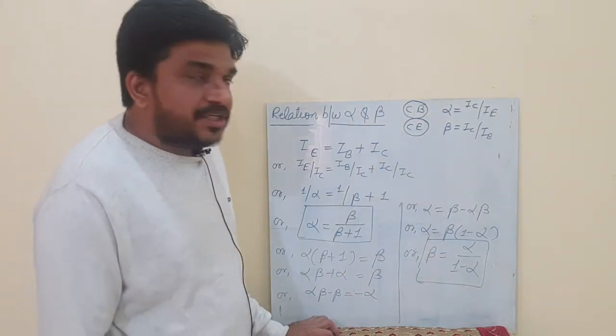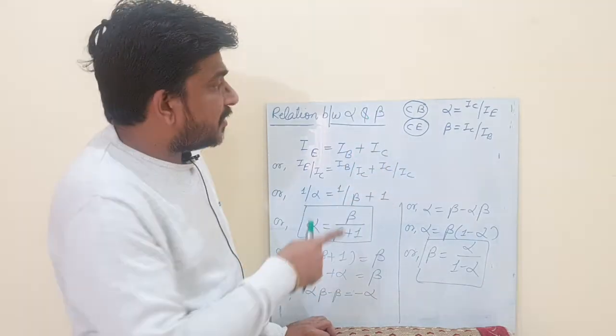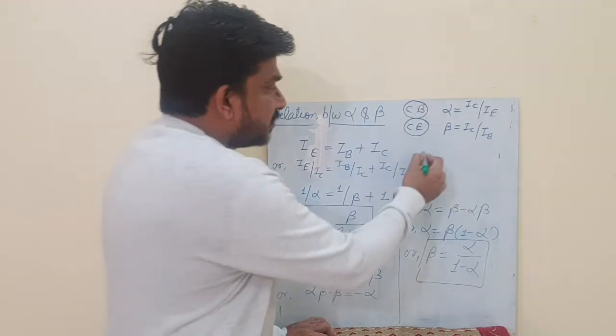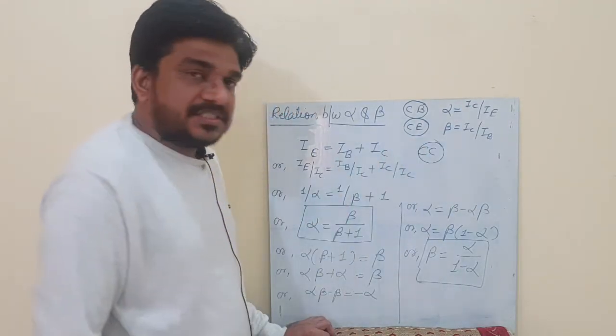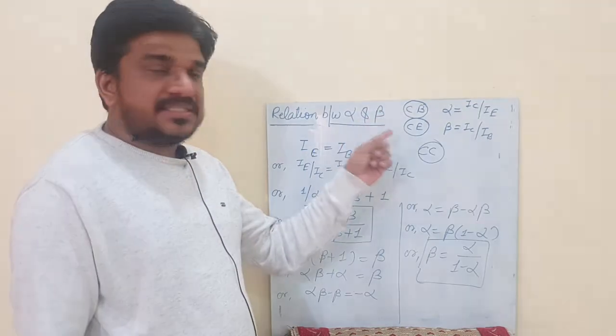I have already told you about the two configurations which are CB and CE, common base and common emitter. Apart from this there is one more configuration which is CC, common collector. But here we are talking about CB and CE configuration.